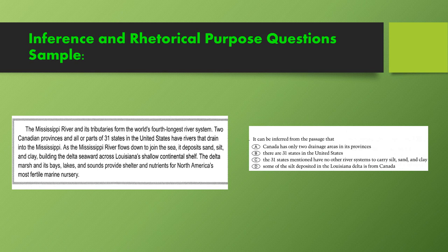Let's have a look at a question: "What can be inferred from the passage?" Let's go over each option. Option A: The rivers from two Canadian provinces drain into the Mississippi River. Drainage areas in Canada are not mentioned, so this option is incorrect.